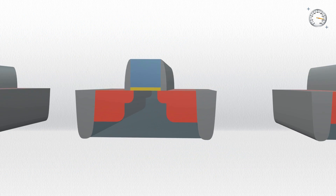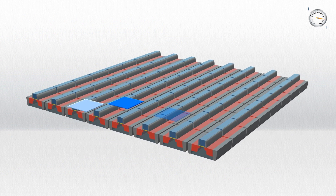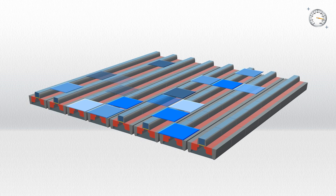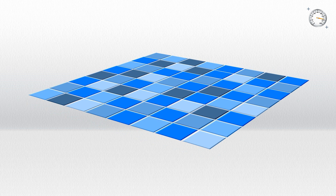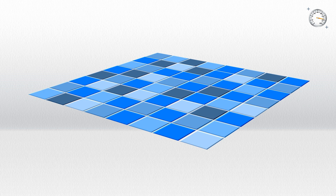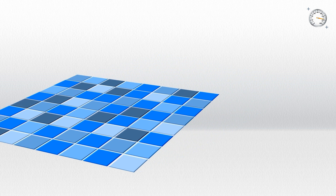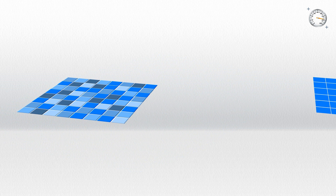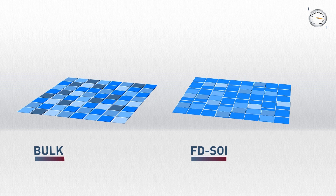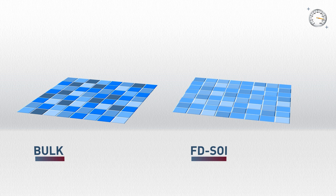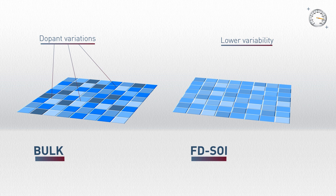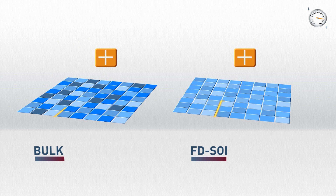In a chip embedding billions of transistors, the characteristics of each transistor are not exactly the same. One of the main reasons for this is the different quantities of dopants injected into the channel during the manufacturing process. In FDSOI, dopant usage is greatly reduced, thereby limiting the variability of the process. As a result, the characteristic of each transistor is closer to the average. This allows the transistor to run faster for a given voltage, since less margin needs to be allowed for process variability.